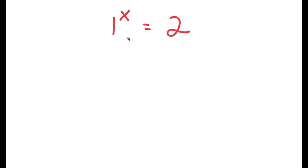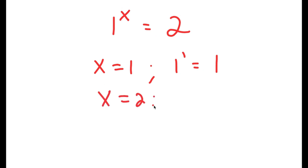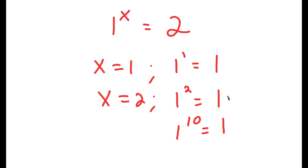In this video, I'm going to solve the equation 1 to the power of x is equal to 2. Before we even start solving this, if x is equal to 1, then I have 1 to the power of 1, which is equal to 1. And if x is equal to 2, then I have 1 to the power of 2, which is also equal to 1. You can even do 1 to the power of 10, which is still equal to 1. So you may be thinking: what possible value of x can make 1 to the power of x equal to 2?